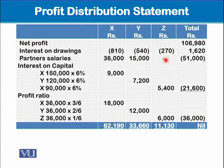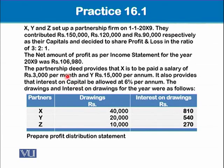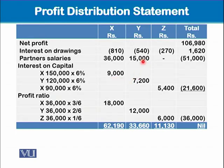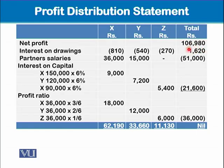X is getting 3,000 per month, which means 36,000 in one year, and Y is getting 15,000 in one year. Z is not getting any salary. The total amount of salary is 51,000. This is one basis for distributing profit — 51,000 is distributed to X and Y only, because Z was not a working partner and therefore will not get any profit based on salary.